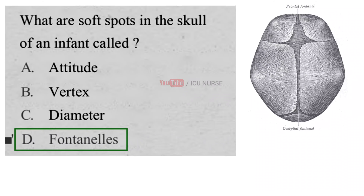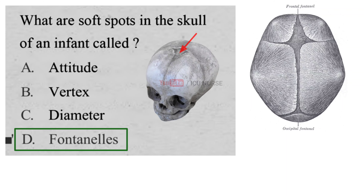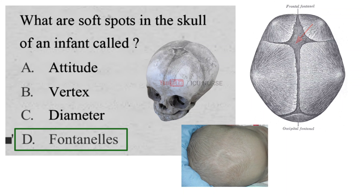An infant is born with two major soft spots on the top of the head called fontanels. These soft spots are spaces between the bones of the skull where bone formation isn't complete. This allows the skull to be moulded during birth. The smaller spot at the back usually closes by age 2-3 months. The larger spot toward the front often closes around age 18 months. It is normally slightly depressed and pulsates. Soft spots are covered by a thick fibrous layer and are safe to gently touch.